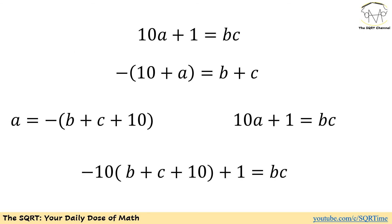Now let's continue. We have -(10 + a) equals b + c. We can say that a equals -(b + c + 10).